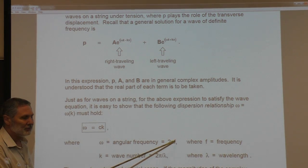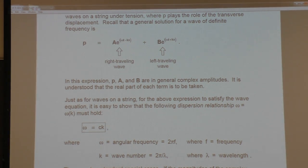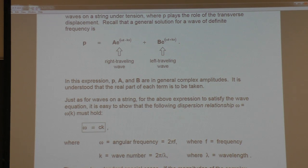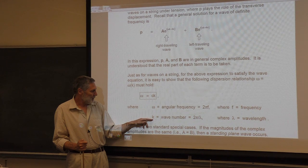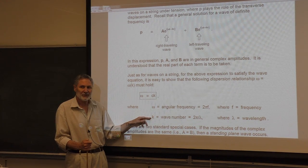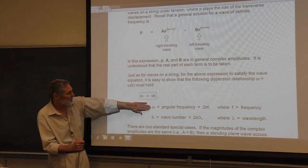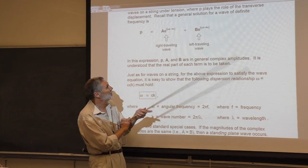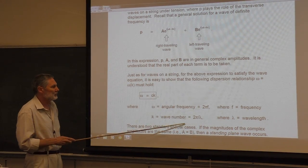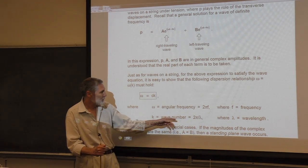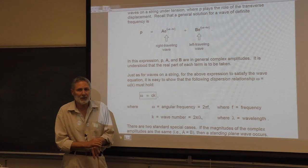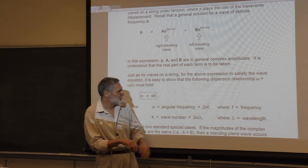The real frequency is used experimentally — for example, in the lab this week you'll measure wavelengths and know the frequency in hertz from a function generator. K is the wave number, used for convenience analytically so we don't carry 2π factors; the wavelength is 2π over the wave number. In the lab you'll be measuring wavelengths and know the frequency in cycles per second.